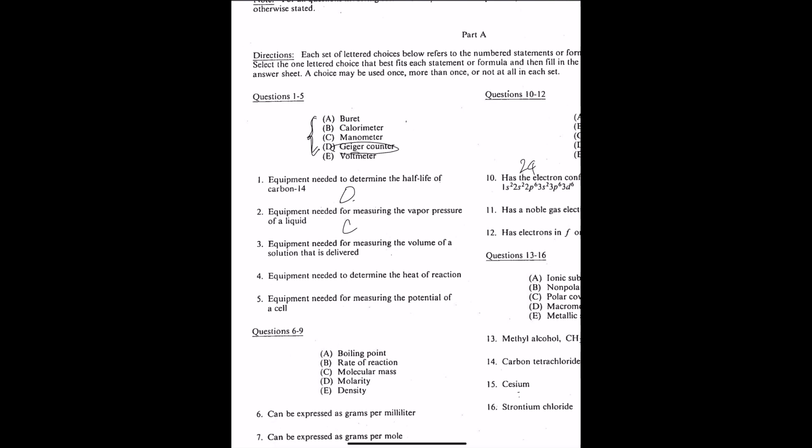Number three, equipment needed for measuring the volume of a solution that is delivered. We know that calorimeter is a device used to measure heat energy. Manometer is used to measure pressure, Geiger counter to measure the alpha rays, and voltmeter. So the obvious answer would be A. The reason is that a buret is a device that you use in titrations to deliver the exact amount of liquid. It kind of looks like this, there's a clamp here, and then there's this valve here that you can control, and there's like tiny increments here.